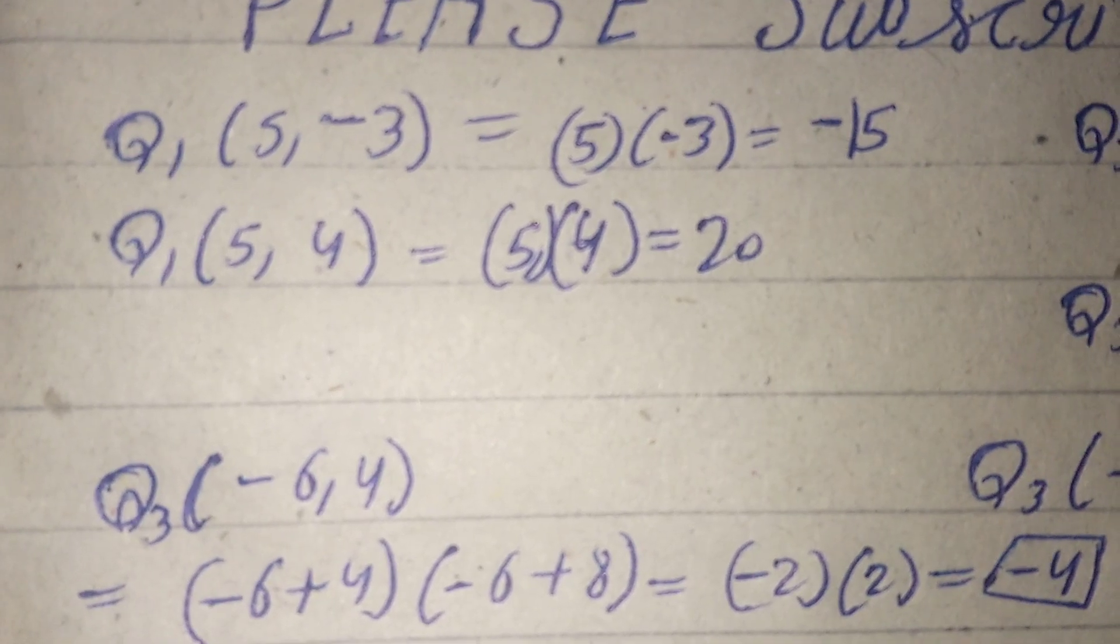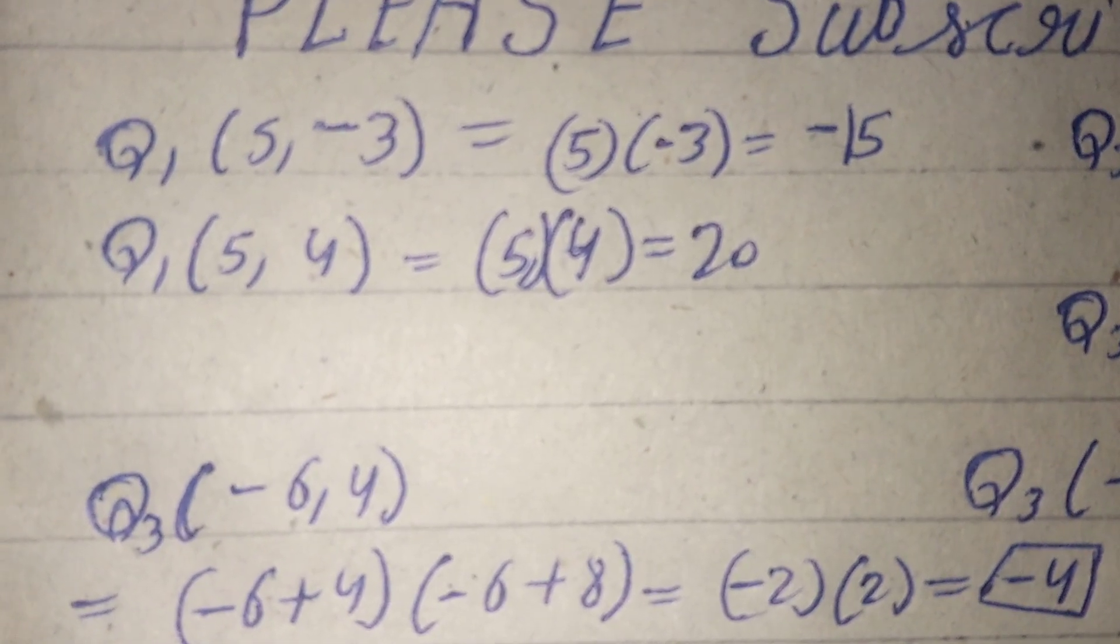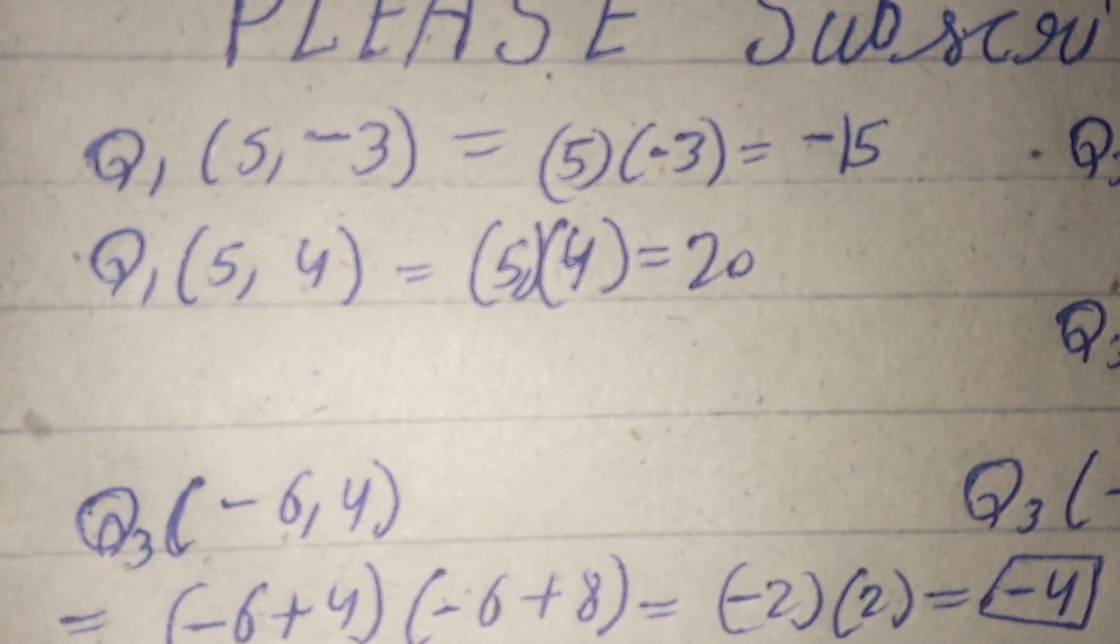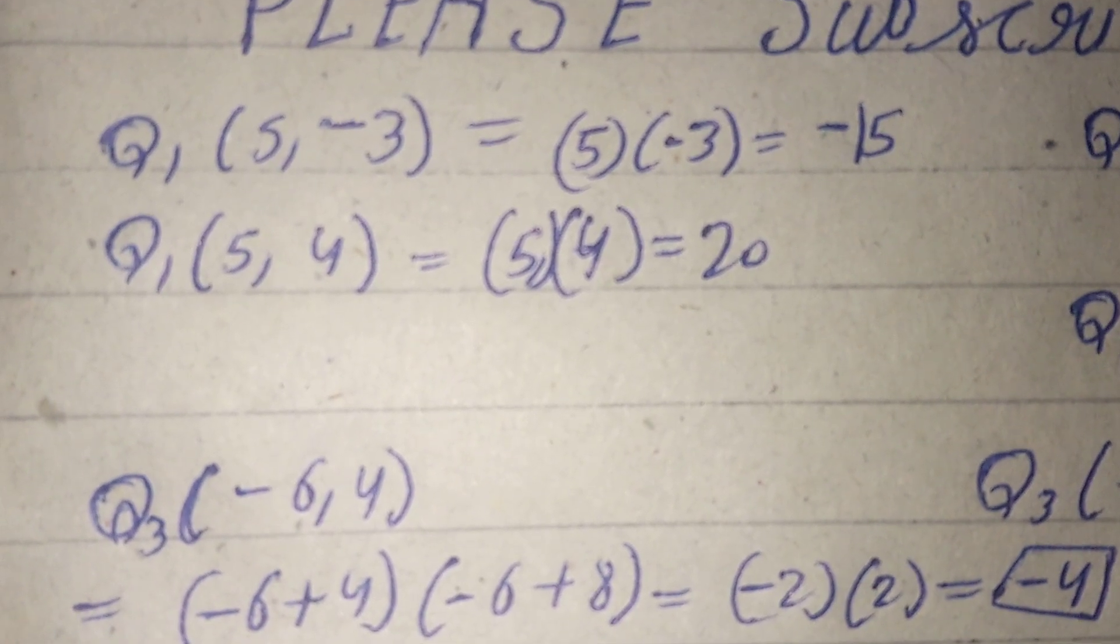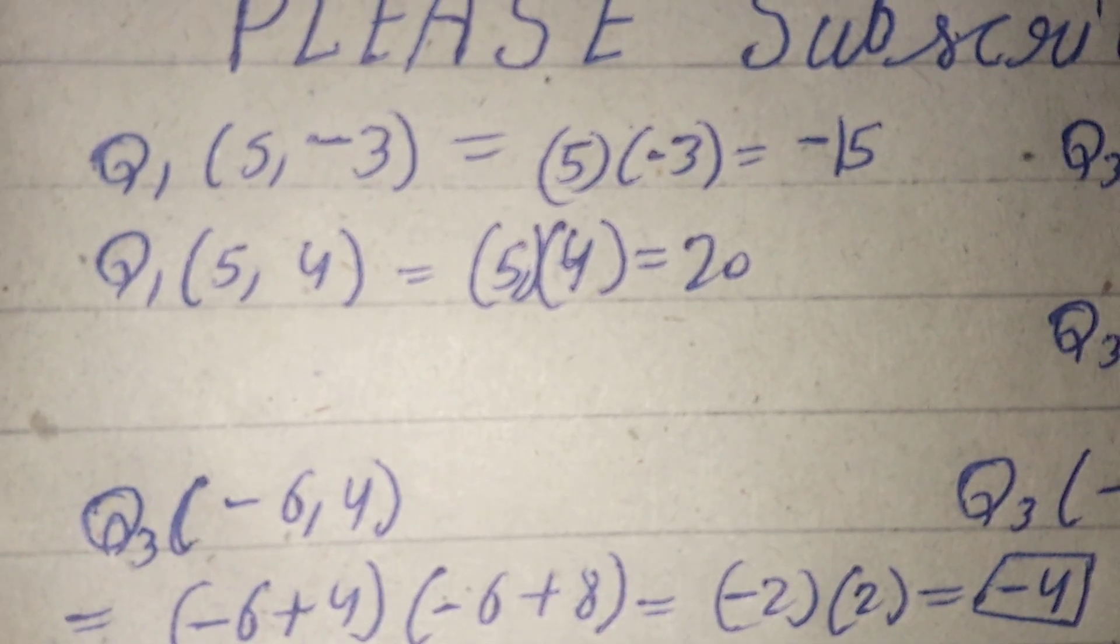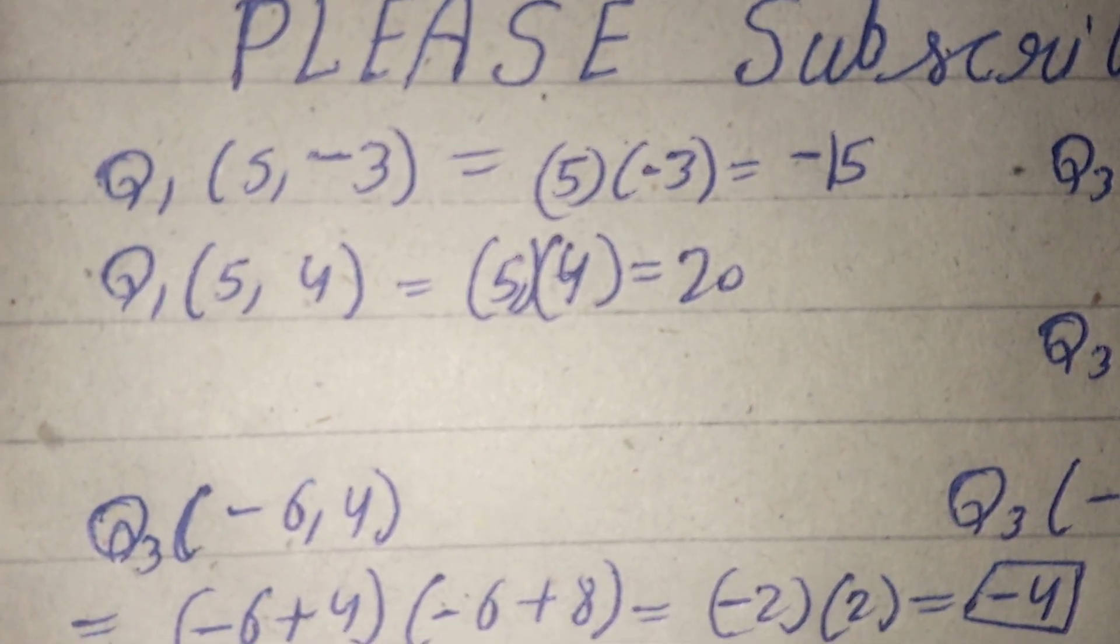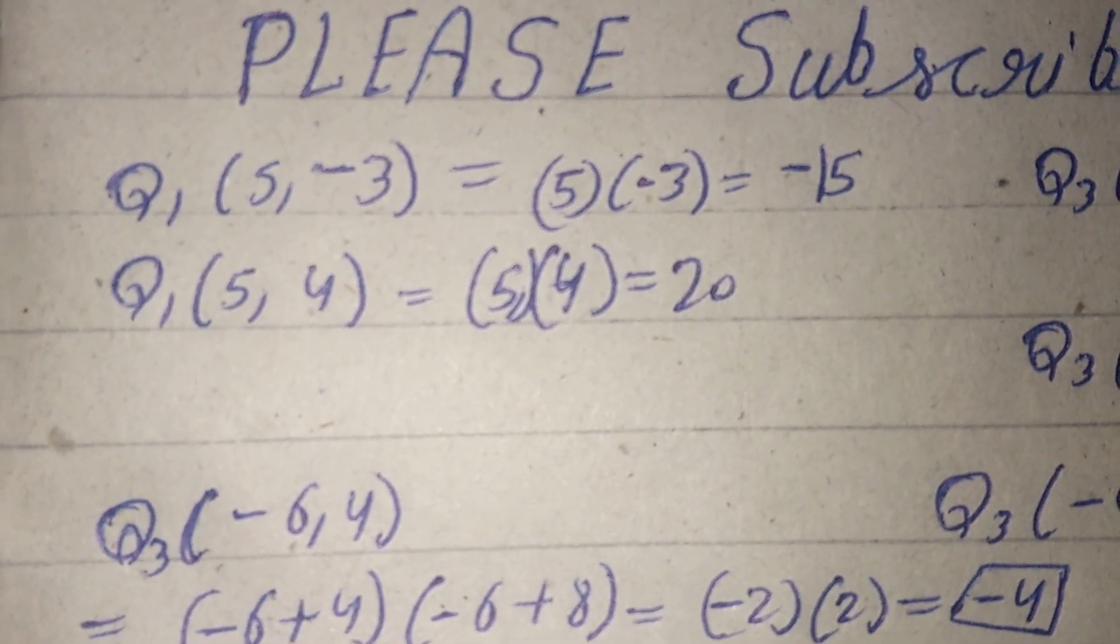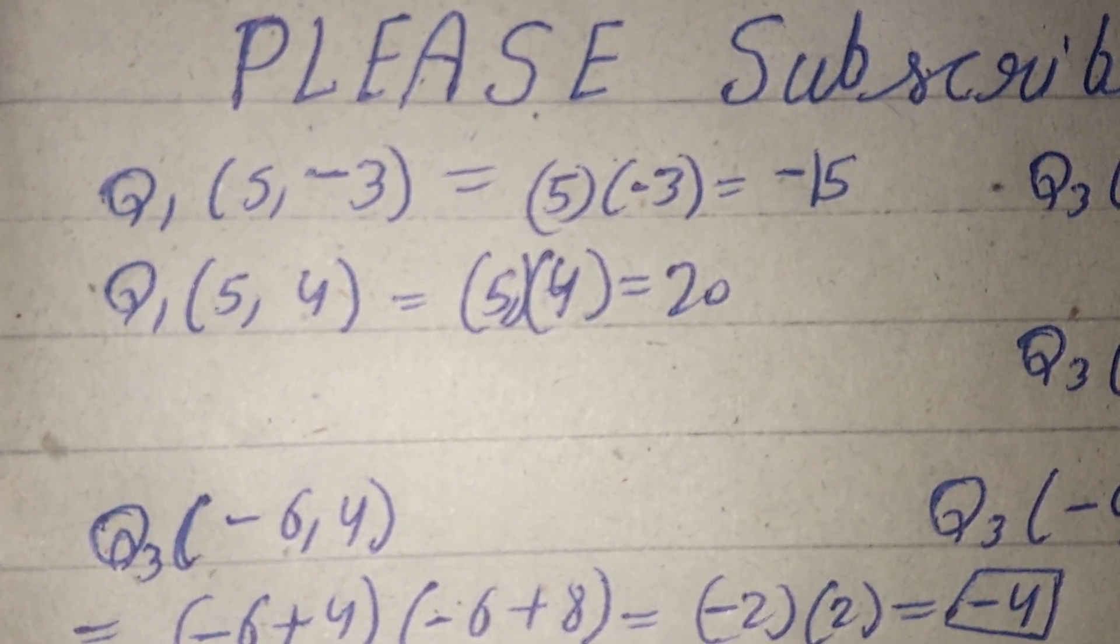For another value, we can see it attains positive value 20 at (5, 4). So it is clear that q1 attains both negative and positive values; it can attain 0 as well when x or y are 0.